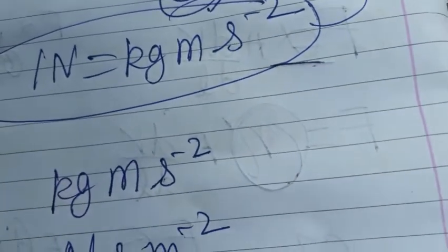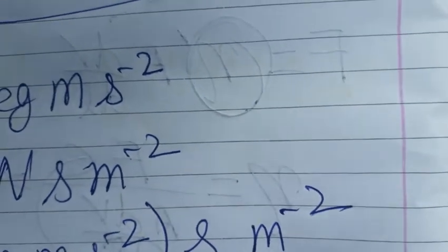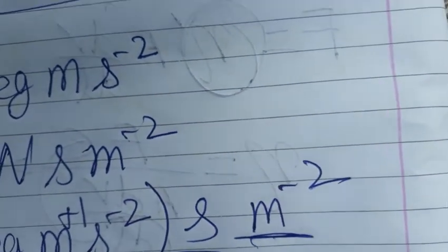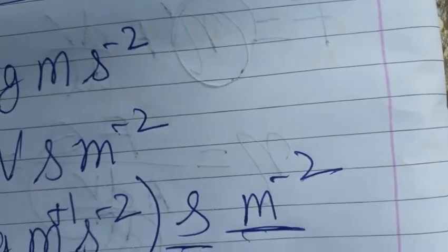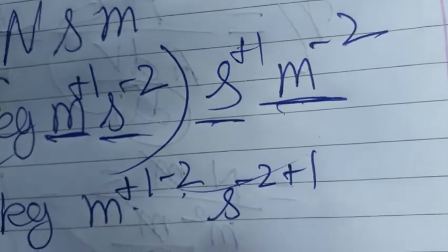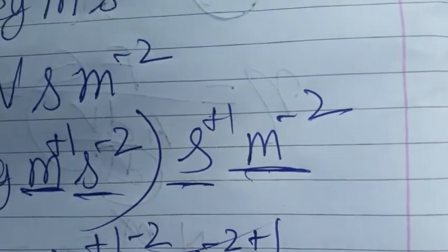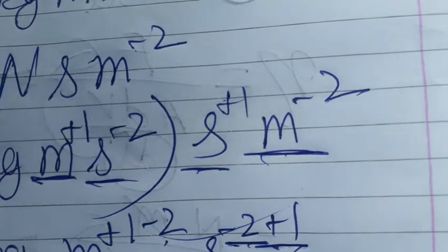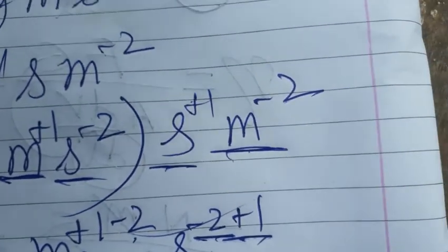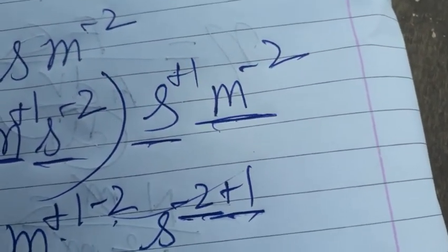Now combining the exponents: for meter, the powers are +1 and −2, giving meter⁻¹. For second, the powers are −2 and +1, giving second⁻¹. So the final SI unit of coefficient of viscosity is kg·m⁻¹·s⁻¹. Thank you.